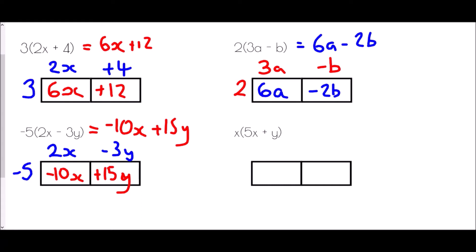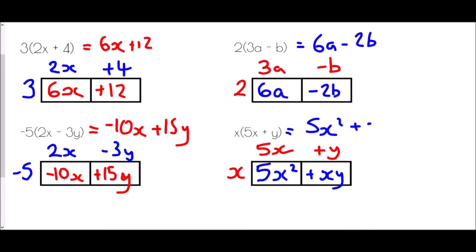In the final expanding example, x(5x + y) means multiplying x by 5x and by y. When multiplying x by itself that is x squared, and with 5x's that gives 5x². Multiplying x by y - two different letters - we simply write them next to each other: xy. Solution: 5x² + xy.